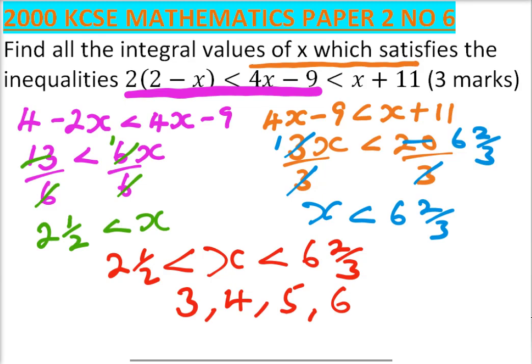6 is included because x is less than 6 and 2 thirds. So that's how you work that question. You get yourself 3 marks.